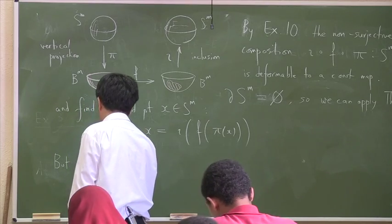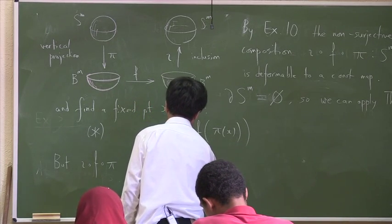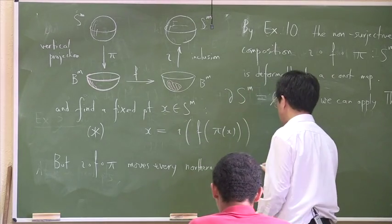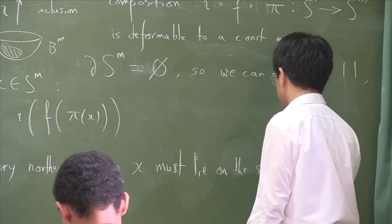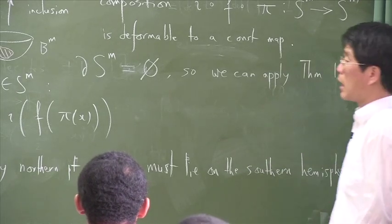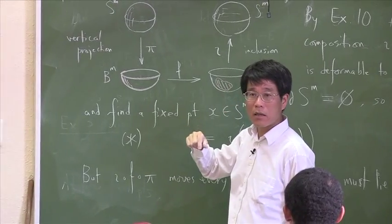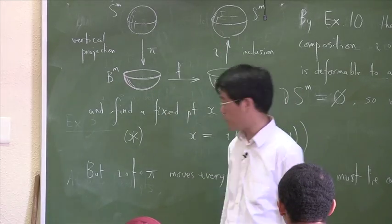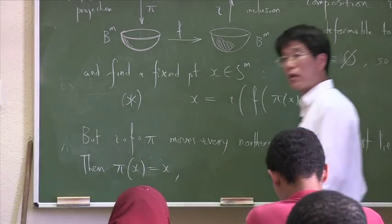This composition, π composed with F composed with ι, moves every northern point. So X must be on the southern hemisphere. X must lie on the southern hemisphere. But if X is on the southern hemisphere, what is the image of X by π? What's π(X)? It's exactly equal to X. It doesn't move under π. Because this map just pushes all the northern hemisphere onto the southern hemisphere and leaves the southern hemisphere alone. So then, in this complicated looking formula, expression, π(X) is in fact X.